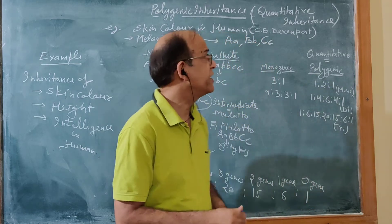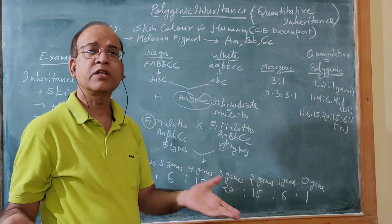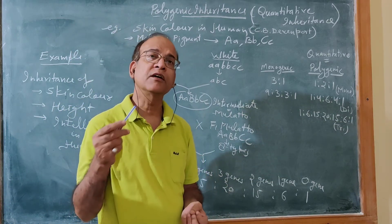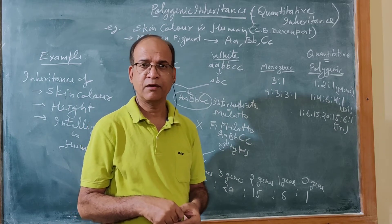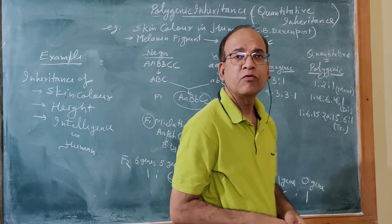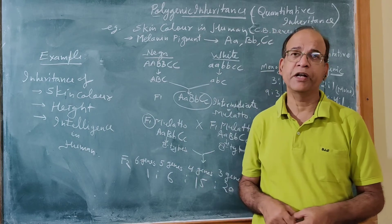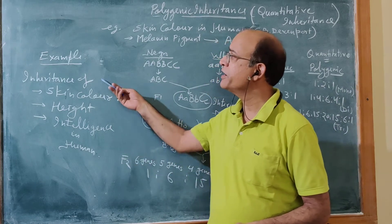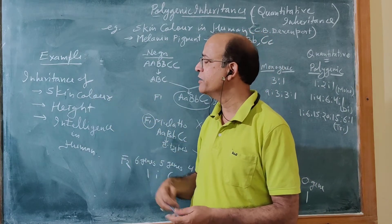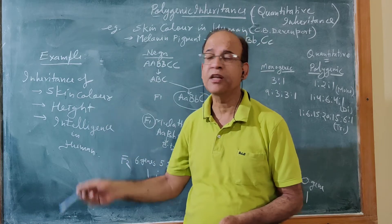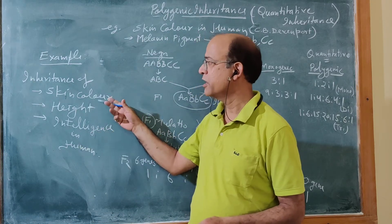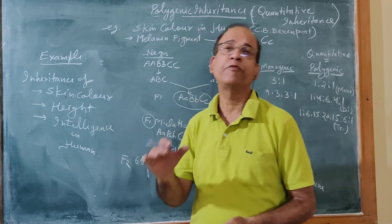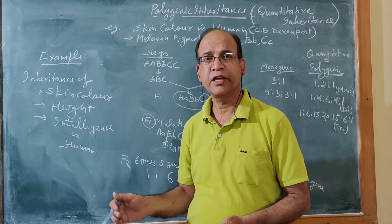It is also called quantitative inheritance because here it is not the quality of genes — it is the quantity of genes which decides the phenotype of an individual. In the case of humans, examples of polygenic inheritance include the inheritance of skin color, height, and intelligence.